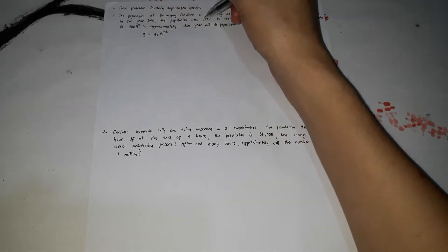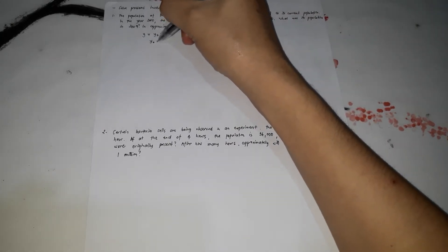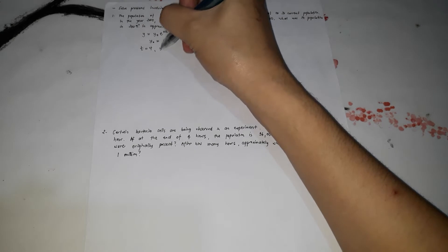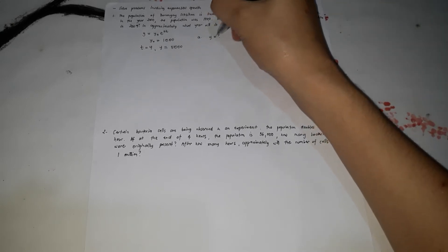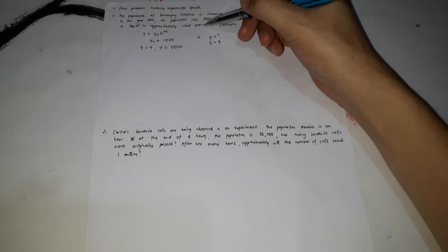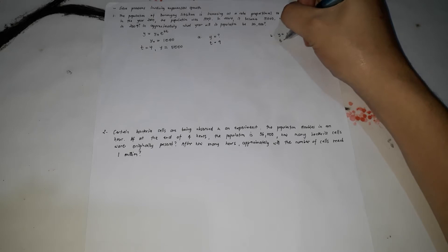So y₀ = 1,000 since the initial year is 2000. After 4 years (from 2000 to 2004), y became 5,000. For letter A, we're looking for y when t = 9, since 2009 is 9 years after 2000. For letter B, we're given y = 100,000 and we're looking for t, the number of years.